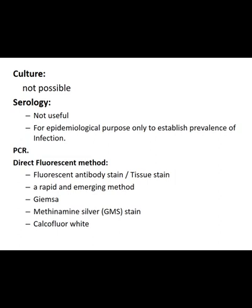Direct fluorescent antibody staining — that is, tissue staining — can also be used to observe Pneumocystis. By using immunofluorescent stain along with Giemsa stain, Gomori methenamine silver stain, and calcofluor white stain, the organism can be identified.